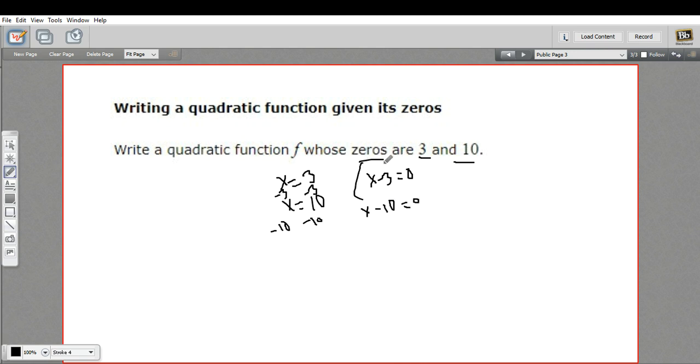These are the two factors. So I'll put those together, x minus 3 times x minus 10. And to get the equation now, all we have to do is multiply those.